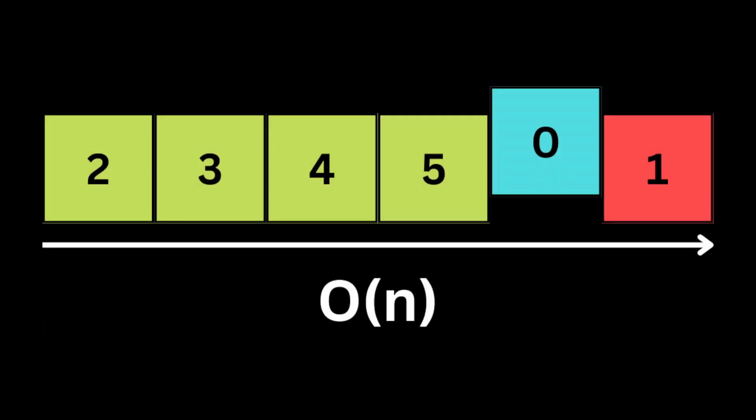The brute force approach is to iterate through the array and find the smallest number, but in a coding interview if they ask for a time complexity of O(log n), that approach fails because it is linear time complexity. So we're going to use a binary search algorithm to find the minimum element. The challenge is that binary search requires a sorted array, but here we have a rotated sorted array.